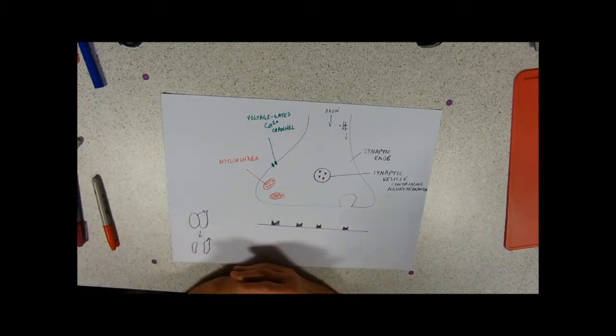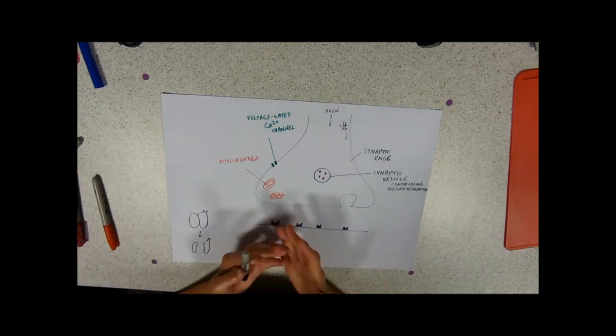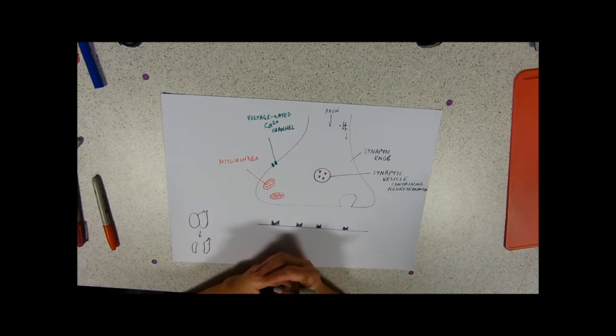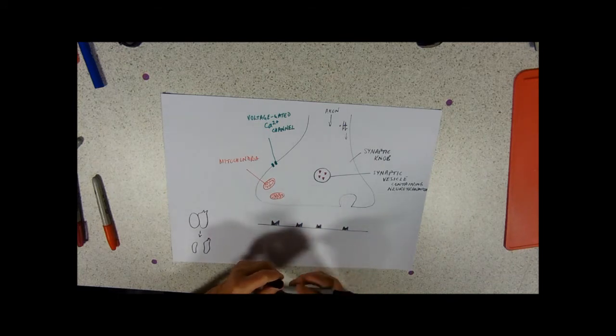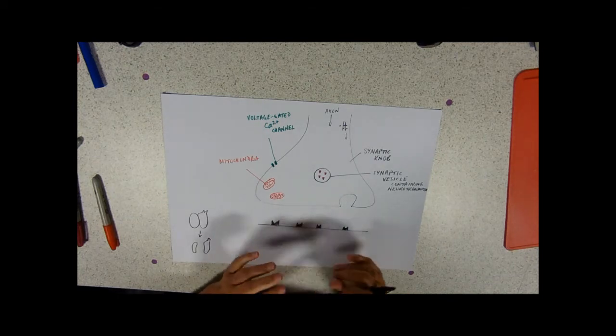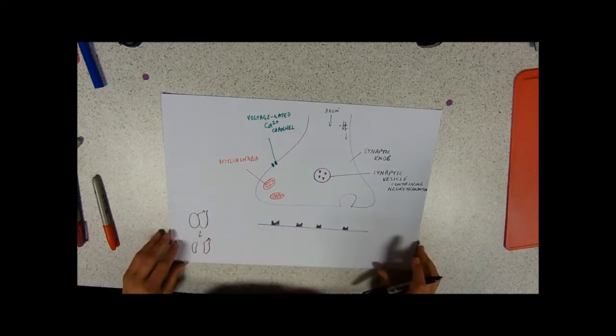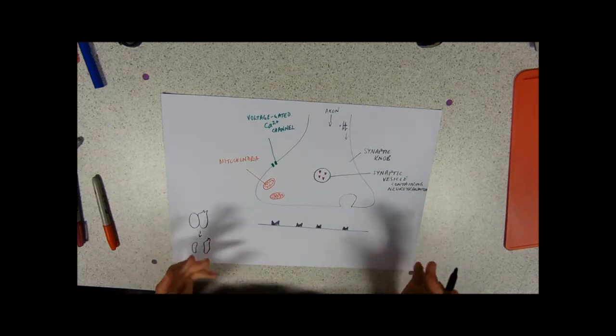So, what is a synapse? A synapse is somewhere where a nerve cell, the axon ending, reaches another cell. So, that could be another neurone, or it could be a muscle, or it could be a gland.